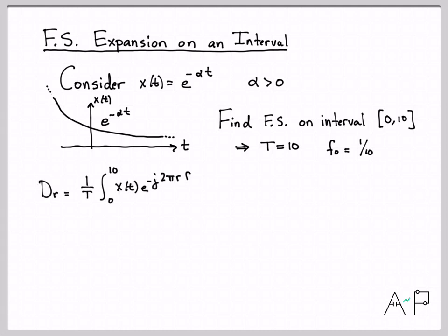Here is the equation that we use in general for the complex Fourier series coefficients. What do we do? We have one over T out front, and then we project x(t) onto e to the minus j, two pi r f naught t. And we integrate over one full period of the signal.